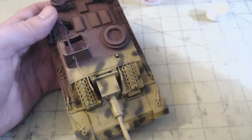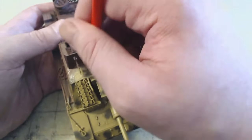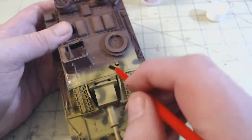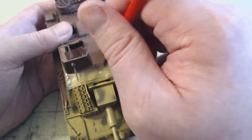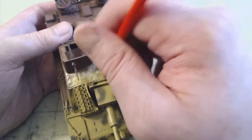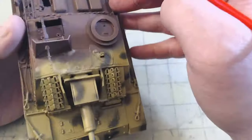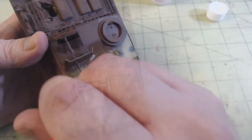Working in small sections, simply paint some Microsol on where you're wanting to do the chipping, give it a moment to set in and affect the paint, and then using a stiff bristled brush you can rub away the paint. As you can see, it sort of froths up as you go about it, so I kept a cotton bud on hand to help clean up things along the way.